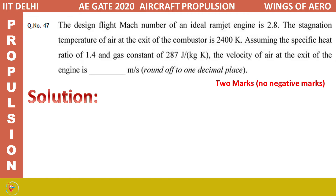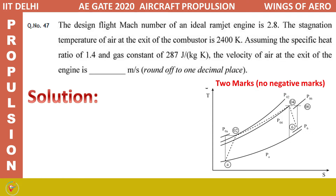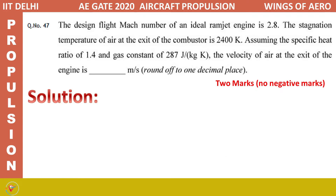The next question is on a ramjet engine. The design flight Mach number of an ideal ramjet engine is 2.8. The stagnation temperature of air at the exit of the combustor is 2400 K. Assuming gamma = 1.4 and gas constant R = 287 J/kg·K, find the velocity of air at the exit of the engine in m/s, rounded to one decimal place. This is a two-mark question with no negative marking.